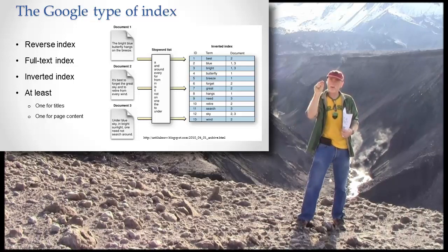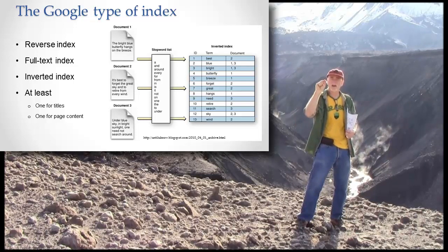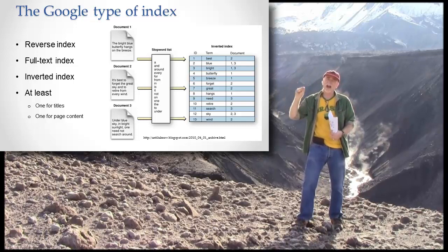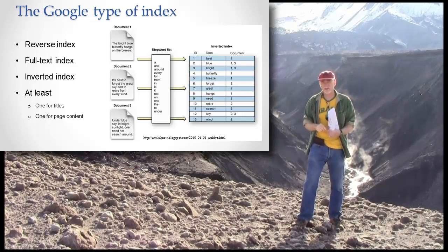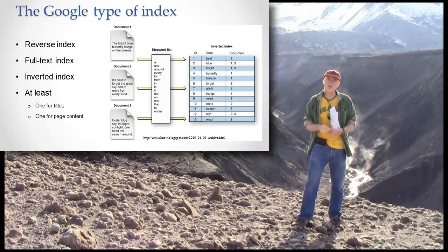And then after that word comes the links, the pointers, the references to all the pages and the position on the page where that word exists. So that's the way to think about the Google index.